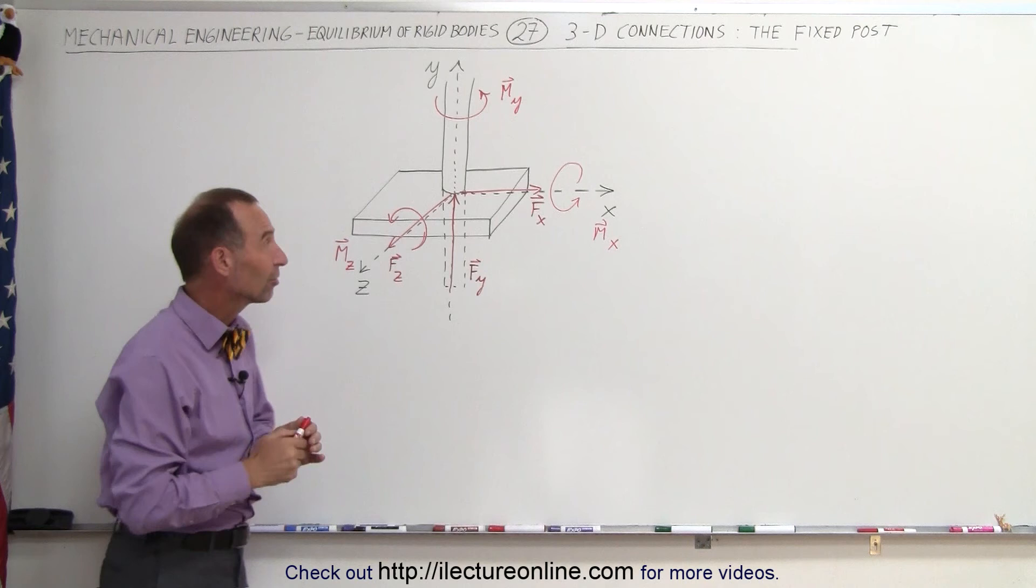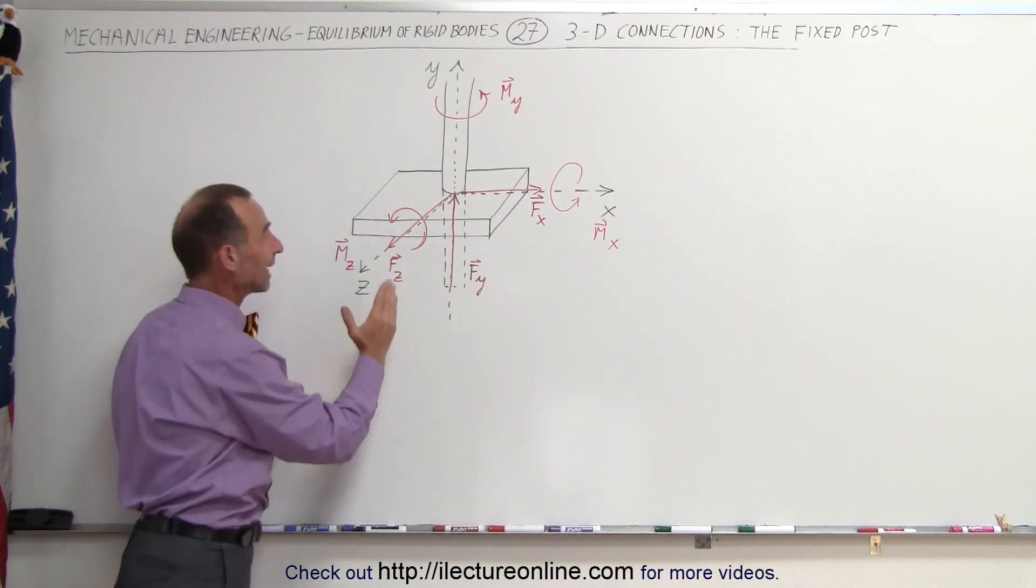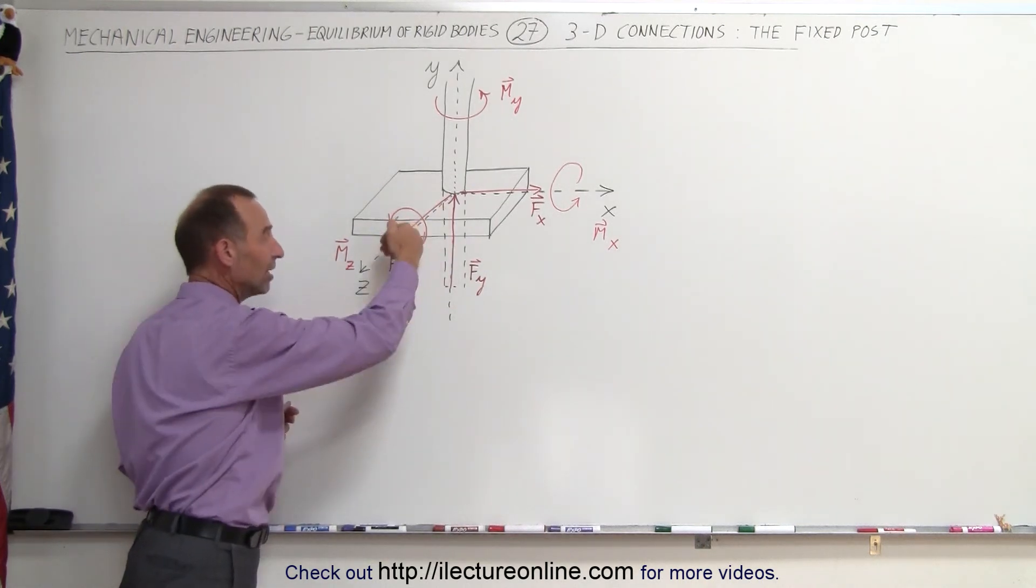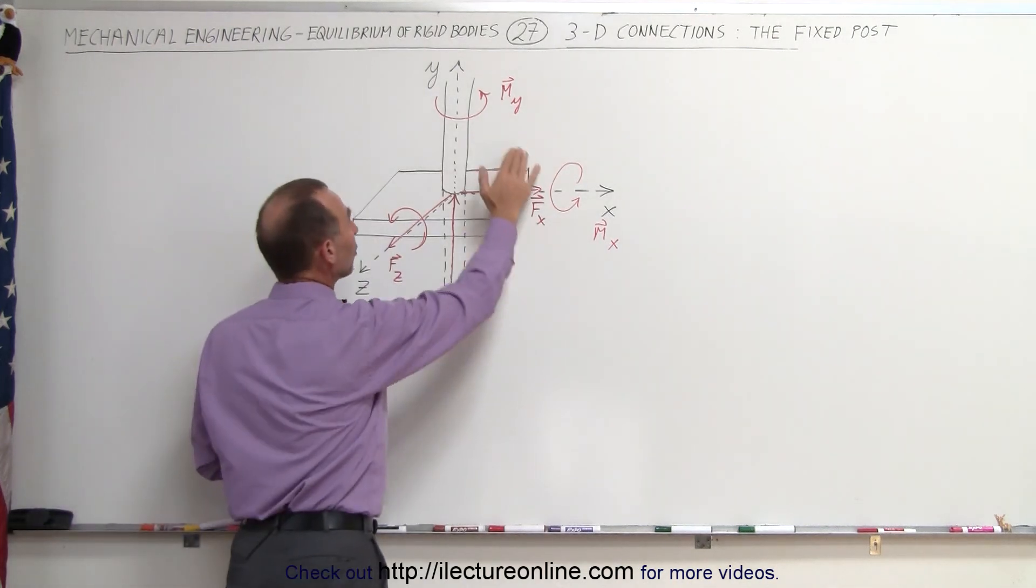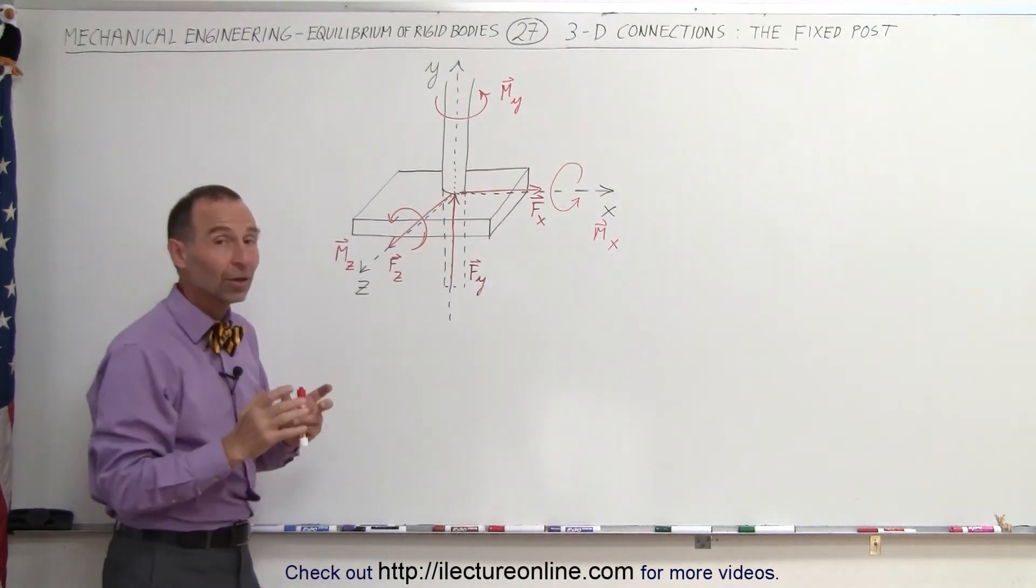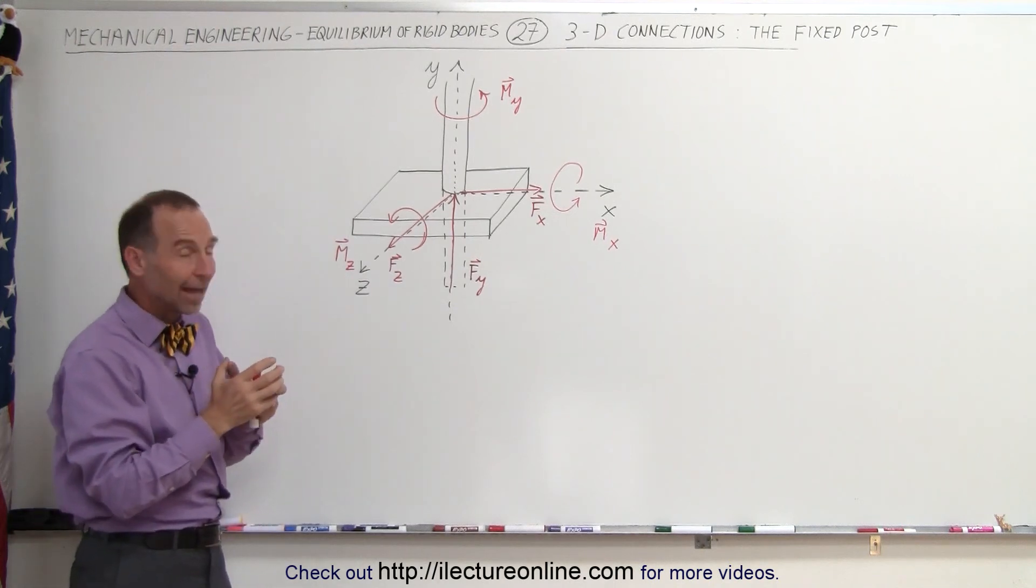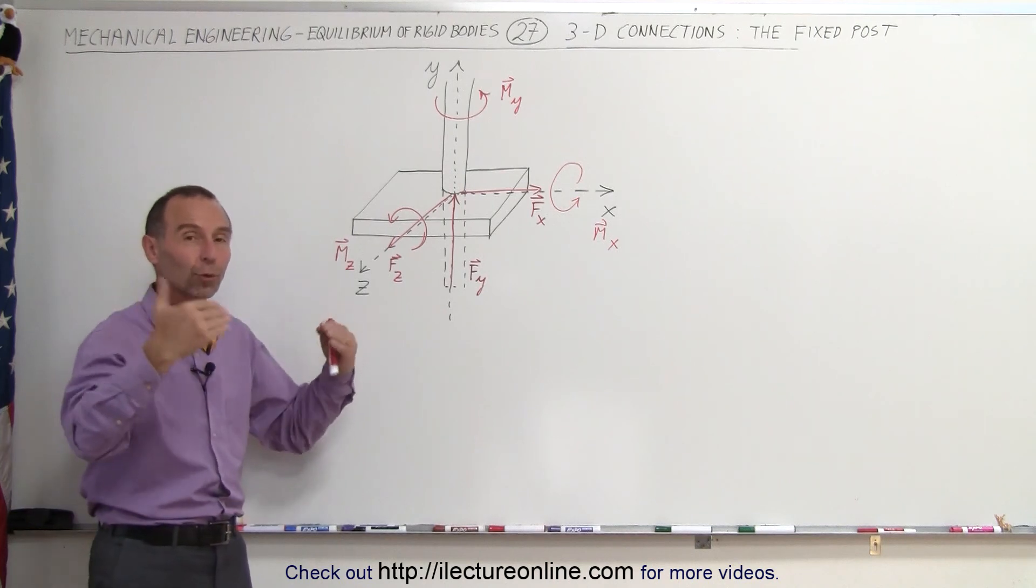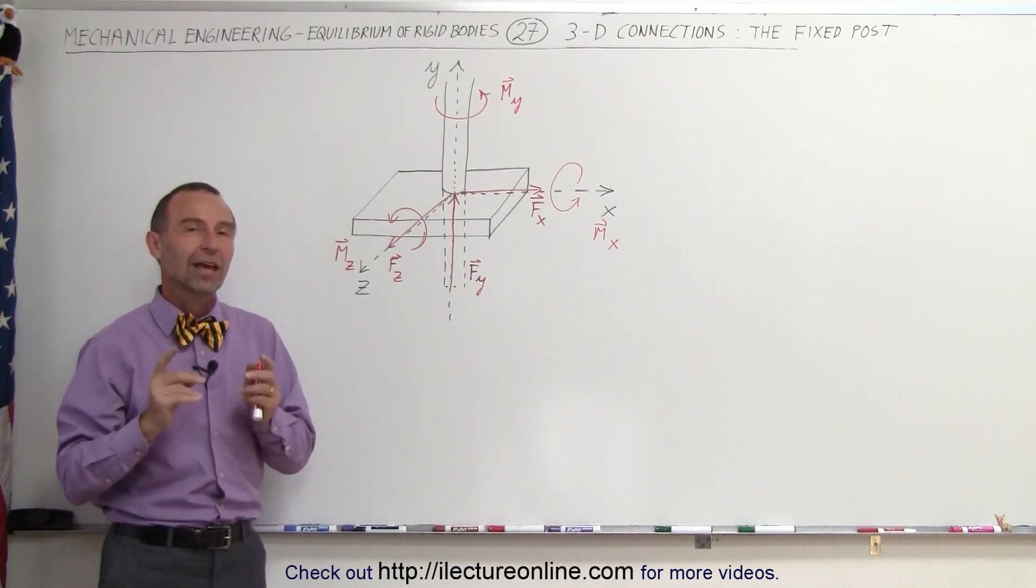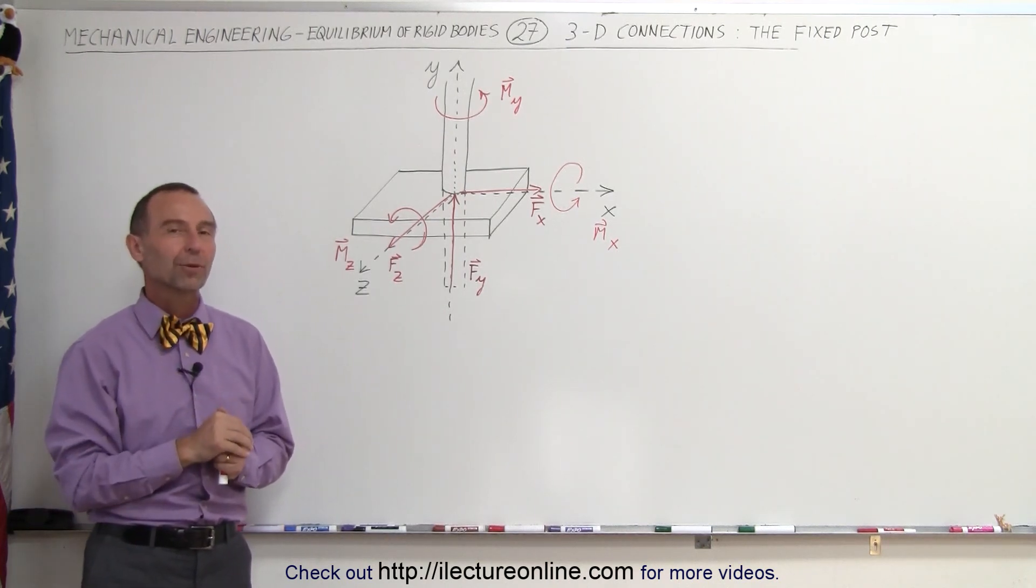So a fixed post like this creates a triad of forces in the x, the y, and the z direction. And it creates a triad of moments in the x, the y, and the z direction as well. Because a fixed post like that cannot rotate in any direction and cannot move in any direction, which allows forces to exist in all three directions and moments to exist in all three directions.